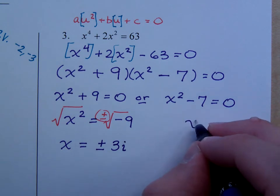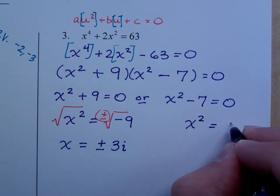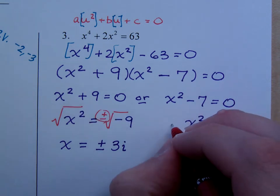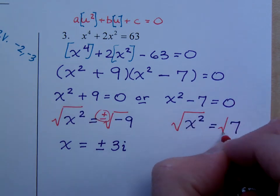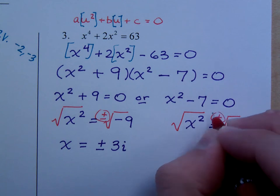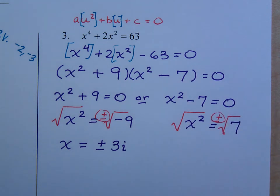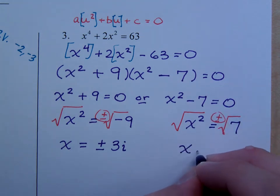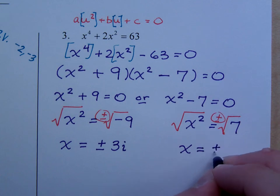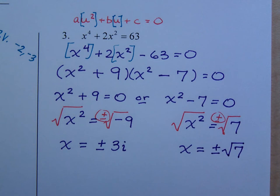Over here, x squared is equal to 7. Square root property with a plus or minus, don't forget that. x is equal to plus or minus the square root of 7. There's nothing else you can do there.